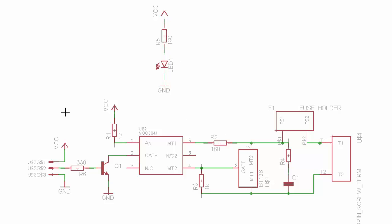Here is my schematic. There's an LED to show that power is applied, the opto isolator, and the triac. There are the 180-ohm and 1-kilohm resistors from the previous slide, and R4 and C1 footprints that I'm not populating with parts. There's also a 2-amp fuse to protect the circuit.